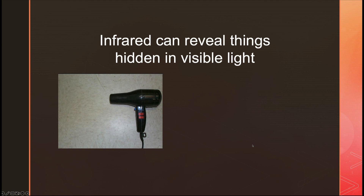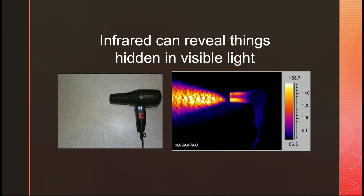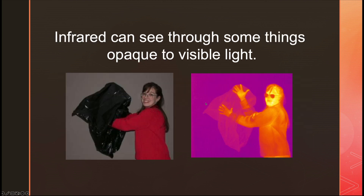Infrared can reveal things hidden in visible light. I can tell you the hairdryer is on — and I love this picture because you can not only see the heating elements in the hairdryer, you can even see the turbulence in the air. Infrared can also see through some things that are totally opaque in visible light. This is just a regular garden garbage bag, but the infrared sees straight through it.